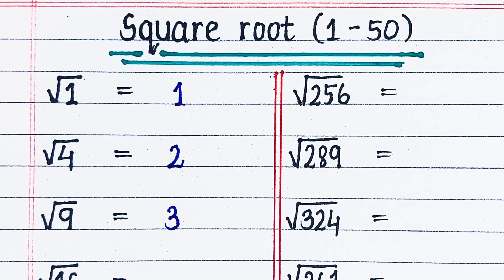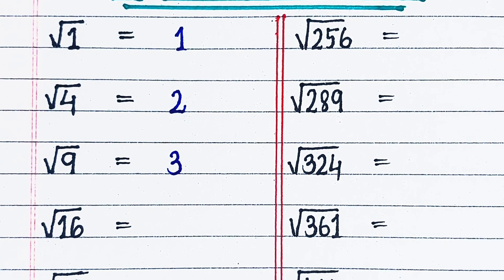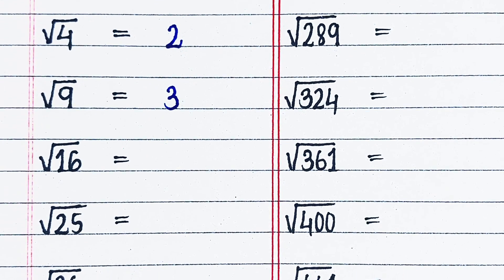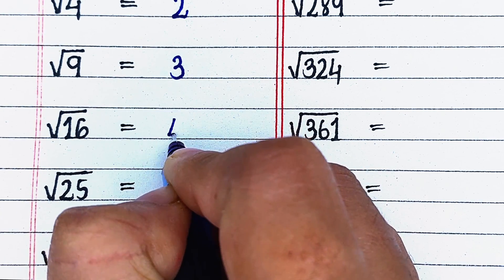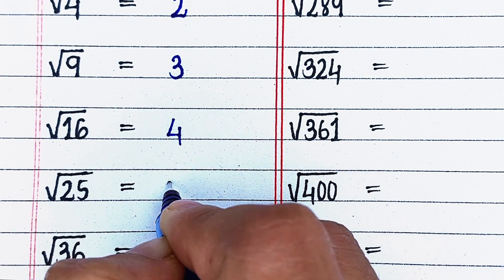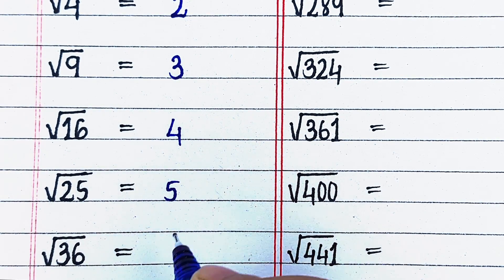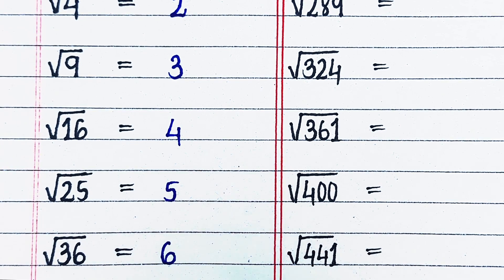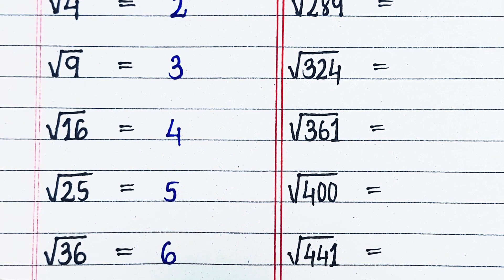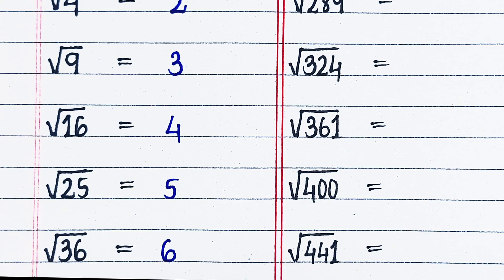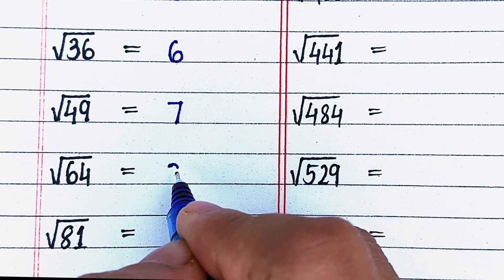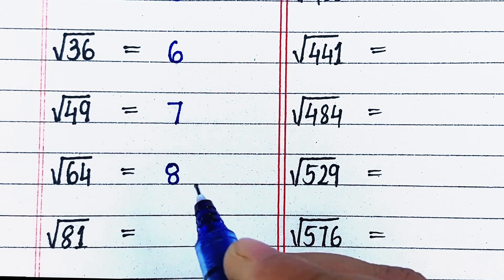Square root of 4 is 2. Square root of 9 is 3. Square root of 16 is 4. Square root of 25 is 5. Square root of 36 is 6. Square root of 49 is 7. Square root of 64 is 8.